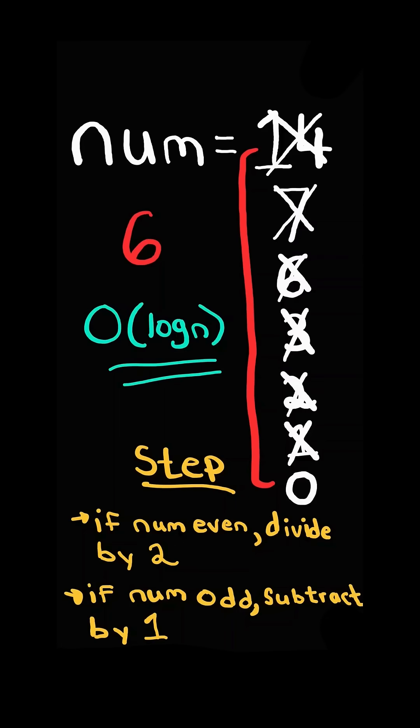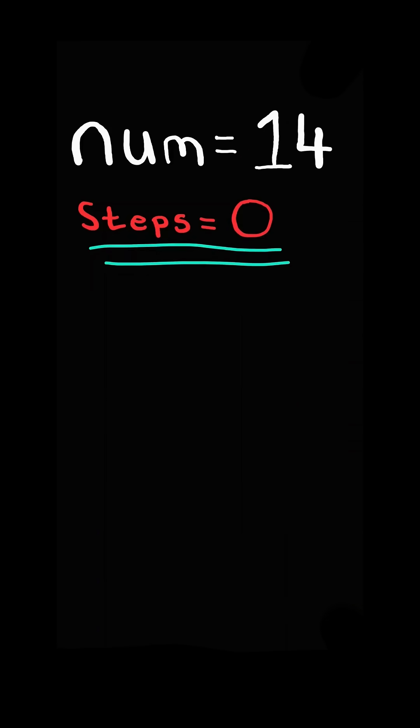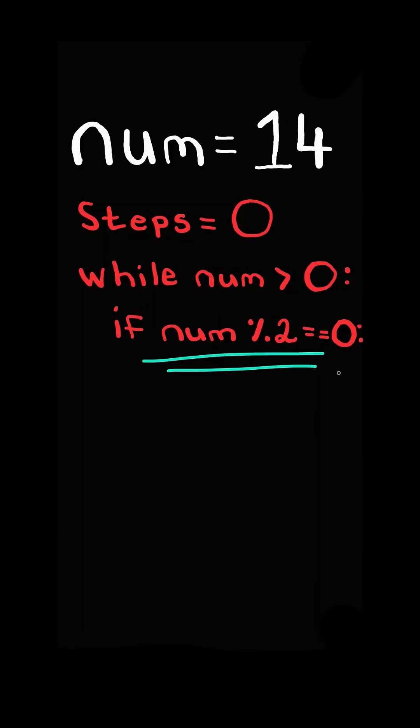We will solve this in O of log n time. First, we initialize the number of steps. And while the number is greater than zero, if the number is even, we divide the number by two.